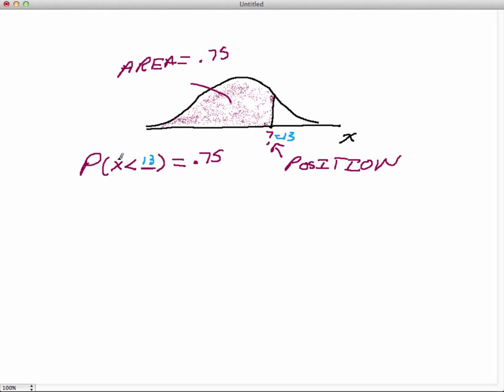So if that was equal to 13, what that would say is the proportion of x's that are less than 13 is equal to 0.75. Now keep that idea in your forefront while we're working through this particular exercise because there's two basic ideas. There's the idea of position and there's the idea of area. Area corresponds to probability.